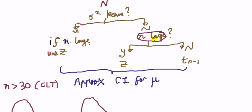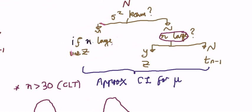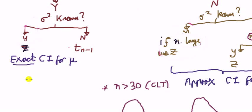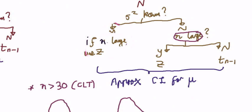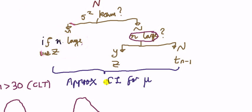If the population variance is not known, we ask ourselves the question, is the sample size n large? If the answer is yes, we use the z table. If it's no, we use t table with n minus one degree of freedom. Now, note in this case that we only get the approximate confidence interval for the population mean, as opposed to the exact.